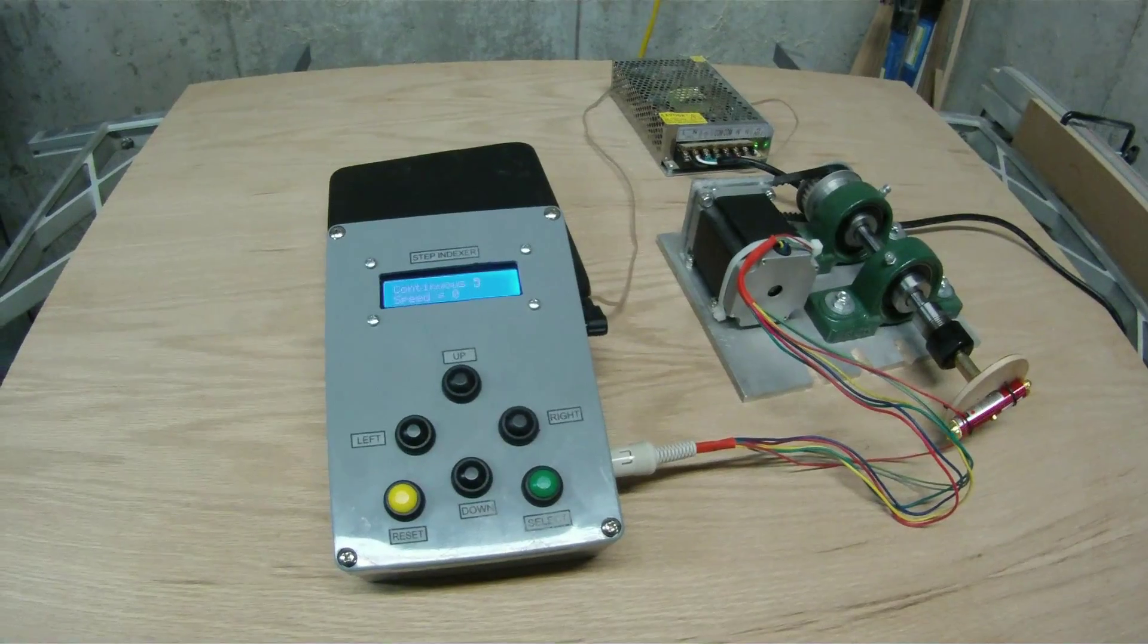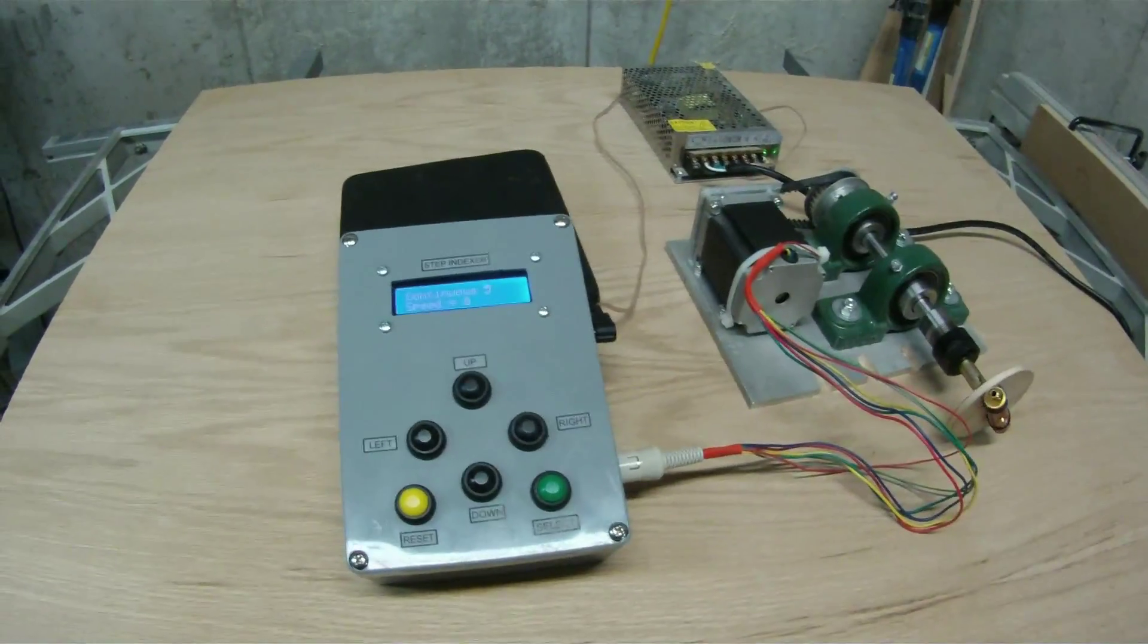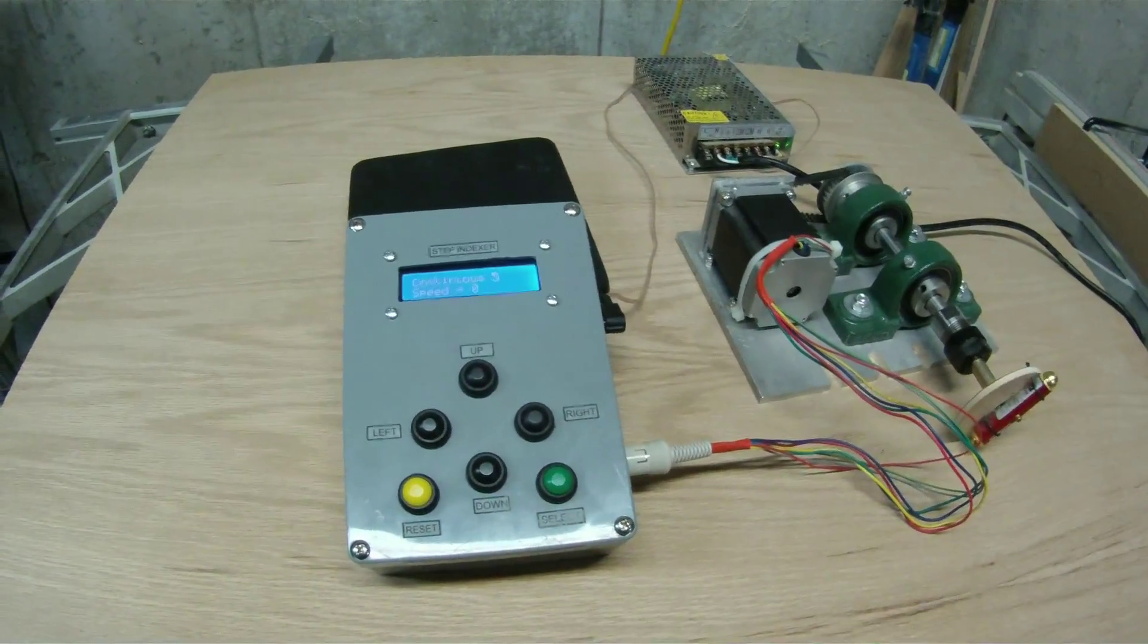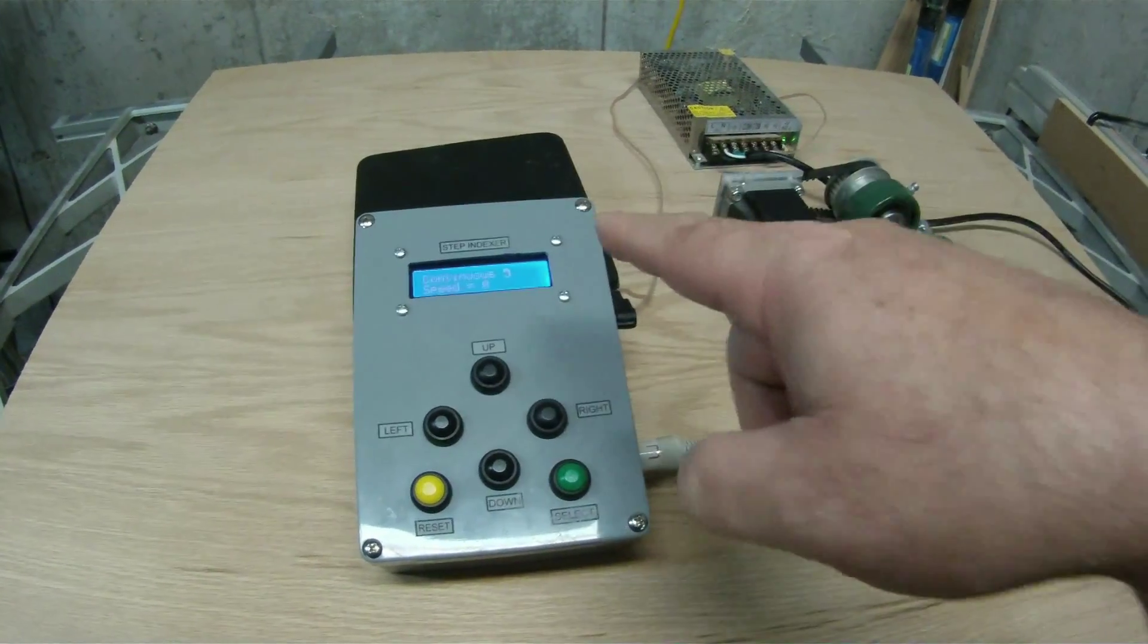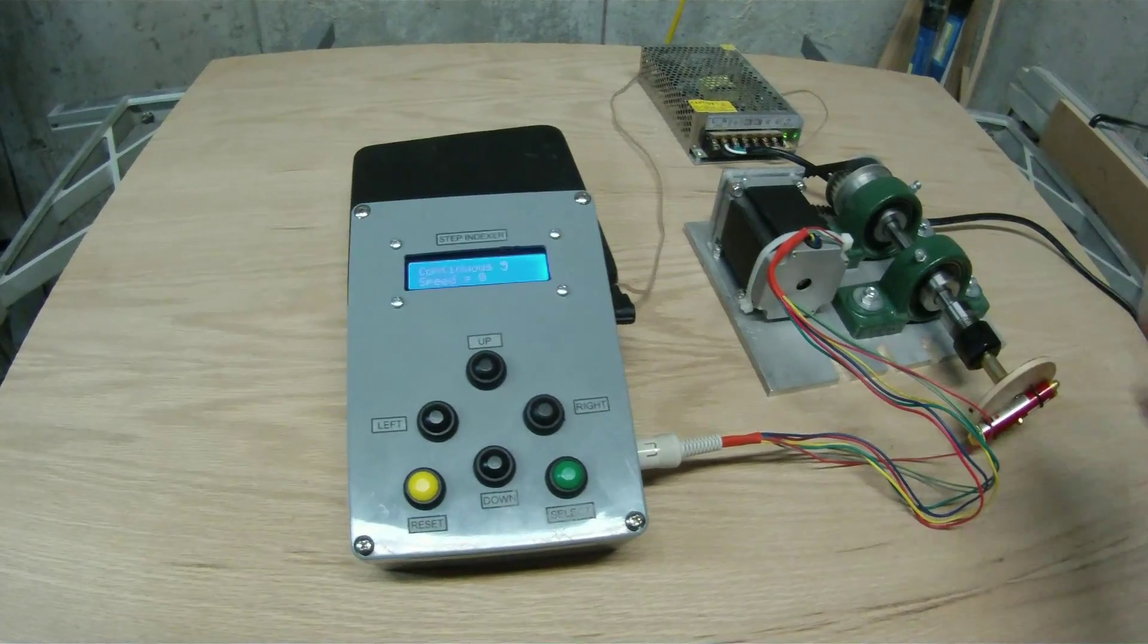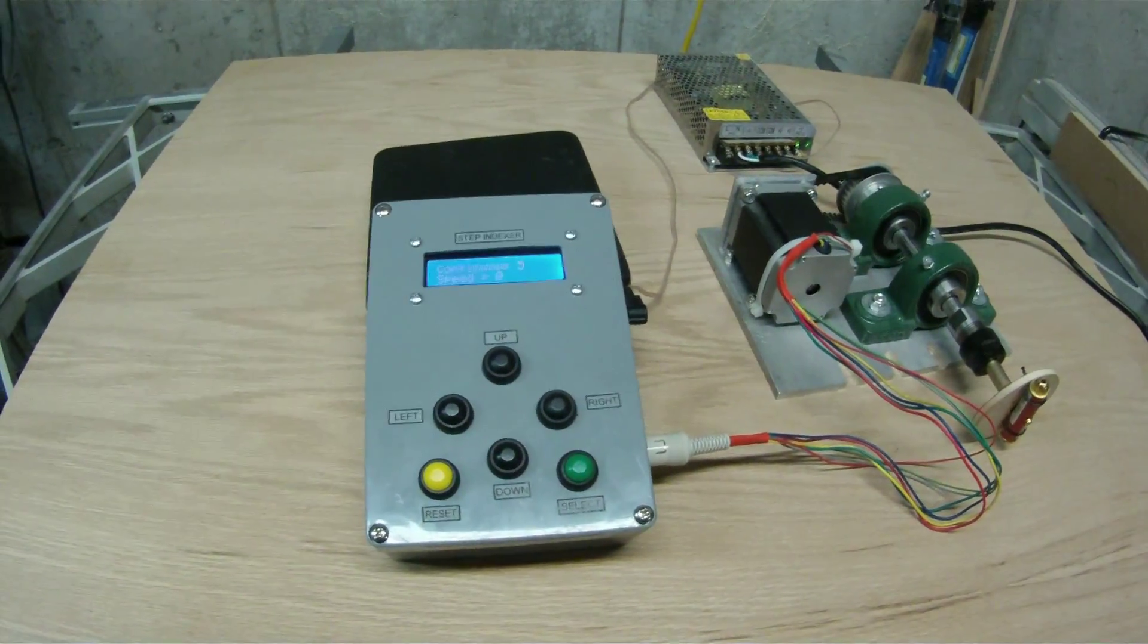and we can make it go the other way by hitting the other button, and the direction is indicated on the screen. Now left means counterclockwise, right means clockwise, but this is turned around so it's going to move a little bit differently. It just depends on how you've got your gearing set up.